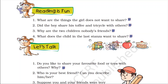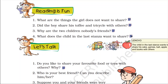What does the child in the last stanza want to share? A stanza in a poem has four lines. In the last stanza, the child wants to share her cake, games, ball, apple, and books with others. So this is the answer.